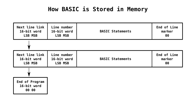The BASIC statements use tokens such as 8F hex to represent the REM statement. Once we put the statements in, the end of the line is marked by double zero. So we've got one line linked to the next line, which is then linked to the end of program — the double zero bytes.